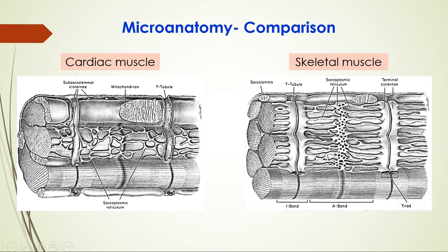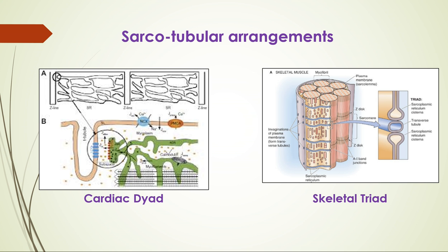In cardiac muscle, the arrangement is not as well organized. There are cisternae-like structures, but the sarco-tubular system is very sparsely organized. The T-tubule, which is very thin in skeletal muscle, is very wide in cardiac muscle. Cardiac muscle has to work throughout life, so something should be special — yet this arrangement is less organized. We'll see the role of this sparsely organized sarco-tubular system. In cardiac muscle this is a dyad arrangement, not a triad, meaning the sarco-tubular system faces only from one side.